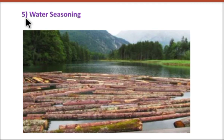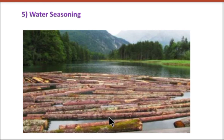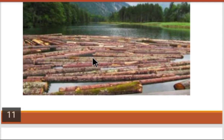Next is water seasoning. In this process, the log of wood is completely immersed in a running stream of water. We keep the wood immersed for a period of two to four weeks, then take it out. During this process, the sap contained in the timber is washed away. It is also a quick method, but it reduces the durability of the timber.